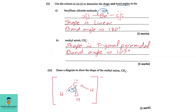Question 1e part 2: Determine the shape and bond angle of beryllium chloride (BeCl2). Beryllium has two electrons on its valence shell and bonds covalently with two chlorine atoms. The valence electrons repel each other to achieve minimum repulsion, pushing as far apart as possible. This gives a linear shape with a bond angle of 180°.